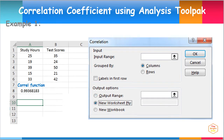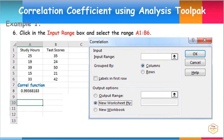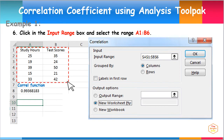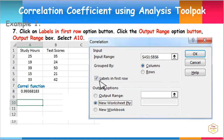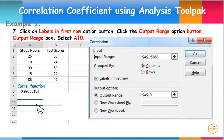Let us input the data for the study hours of students and their test scores. To do this, click in the Input Range box and select the range cells from A1 to B6. Next, click on Labels in First Row button. Then click the Output Range option button, then click in the Output Range box and select cell A10. This provides the location placement of the resulting output. Click OK.